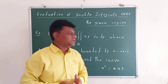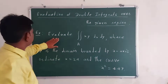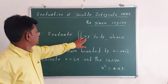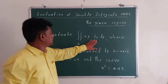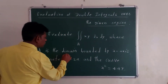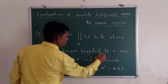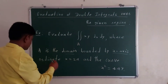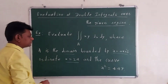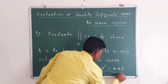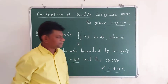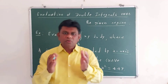The example is: evaluate the double integral over the region A of X·Y dY, where A is the domain bounded by the X axis, the ordinate X equal to 2A, and the curve X² = 4AY.